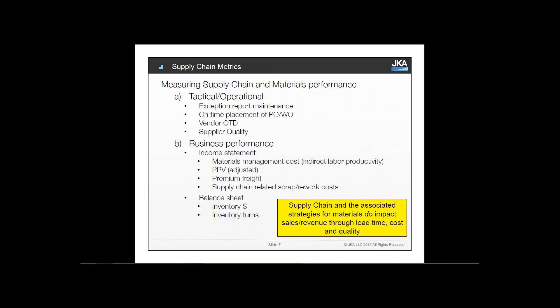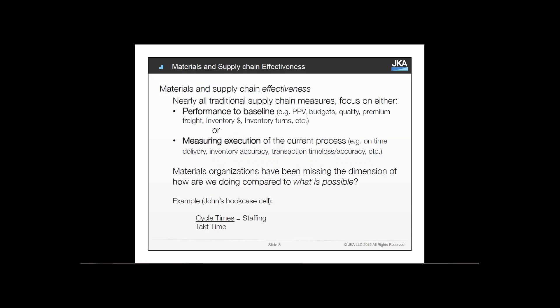When talking about supply chain and materials performance metrics, I put them in two categories: tactical and operational measures — such as exception report maintenance and vendor on-time delivery — and business performance measures that impact the income statement and the balance sheet. As supply chain professionals, it's important to recognize that your supply chain's ability to enable and support business growth links you directly to the P&L on the revenue side, not just the cost side.